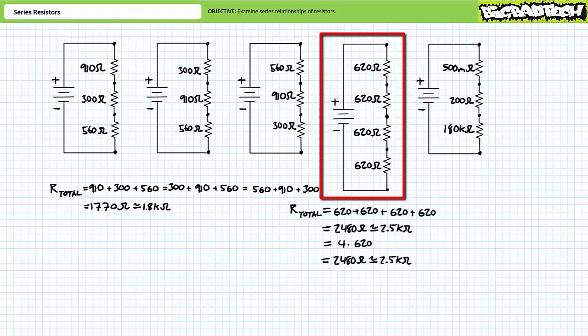For the fourth circuit, the source sees a total resistance of 2480 ohms, or roughly 2.5 kilo-ohms. This illustrates an important time-saving feature: the total resistance of a series combination of identical resistors is the resistance value times the number of resistors. 620 plus 620 plus 620 plus 620 equals roughly 2.5 kilo-ohms, as does 4 times 620.